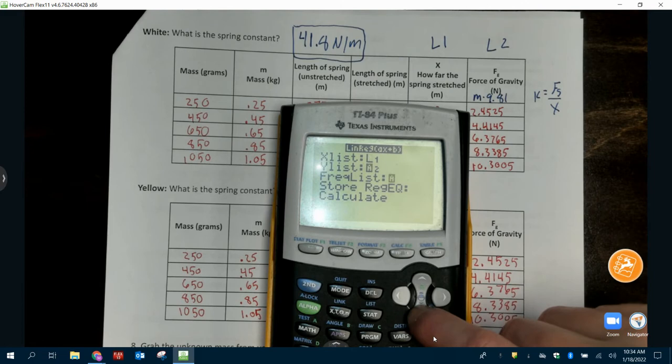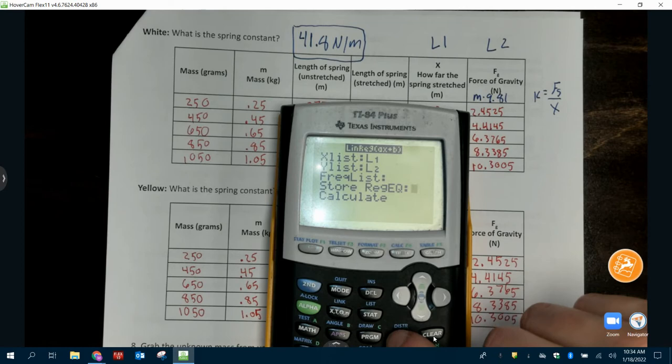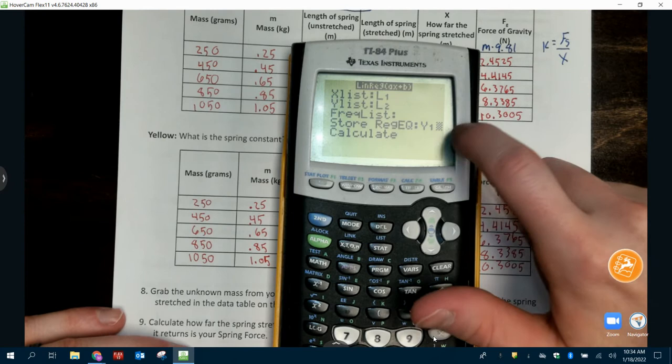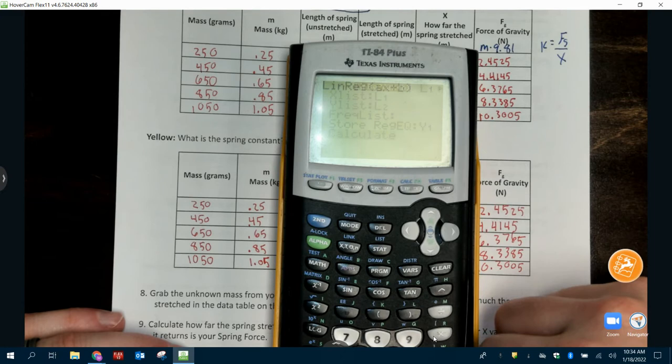You're going to go down to store reg EQ where it's flashing here. You're going to press VARS for variable. That's right here. You're going to go to the right to where it says function. And then you're going to press enter twice. When you do that, it should put Y1 here. And you press calculate.